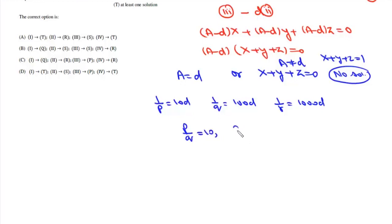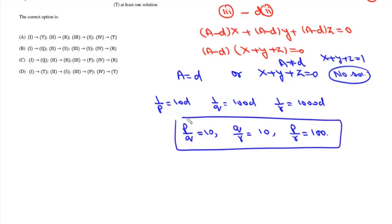Continuing: Q/R = 10 and P/R = 100. So if any of these ratio conditions hold, the equation system has infinitely many solutions. If A = d, we have no solution.